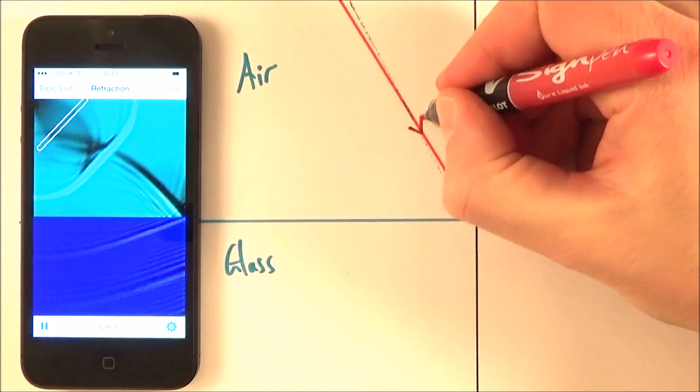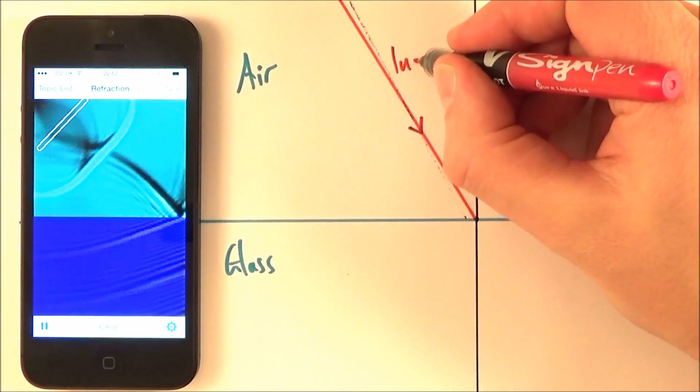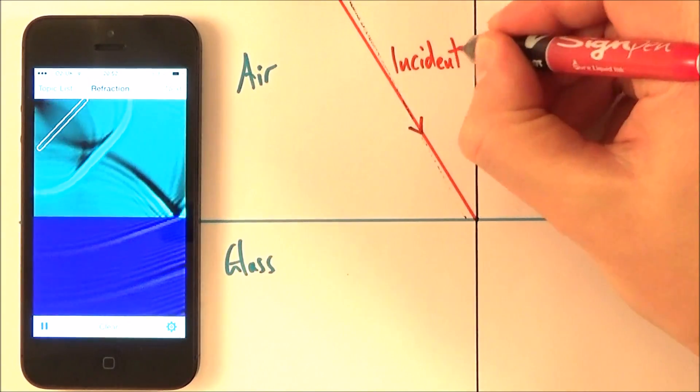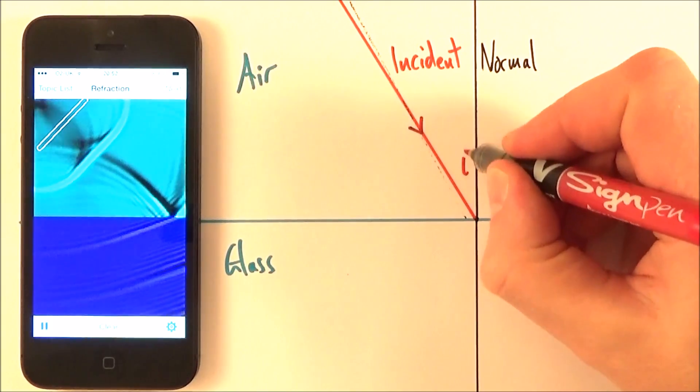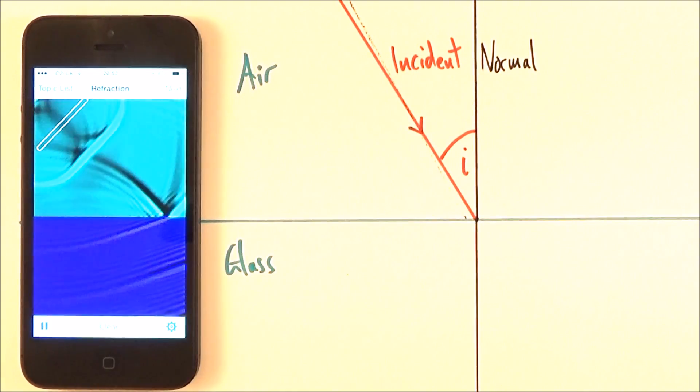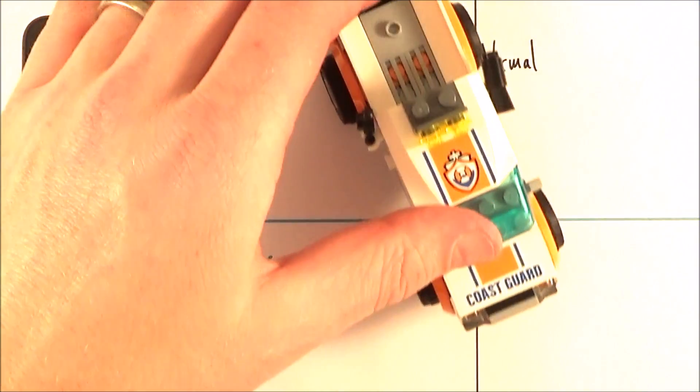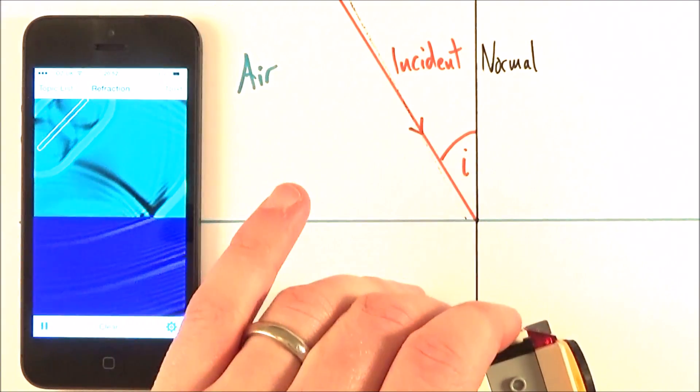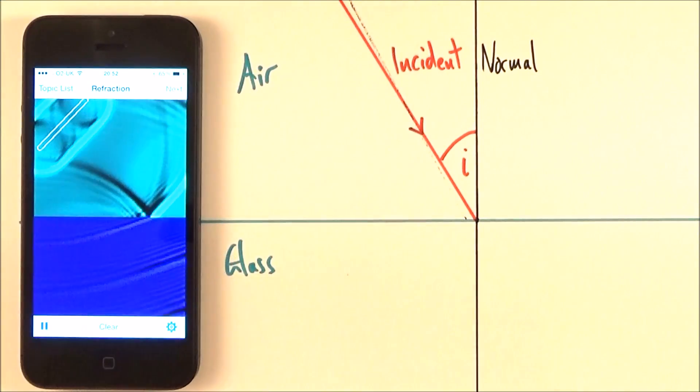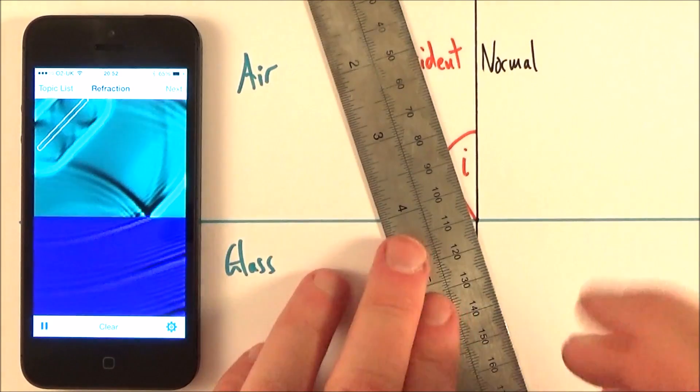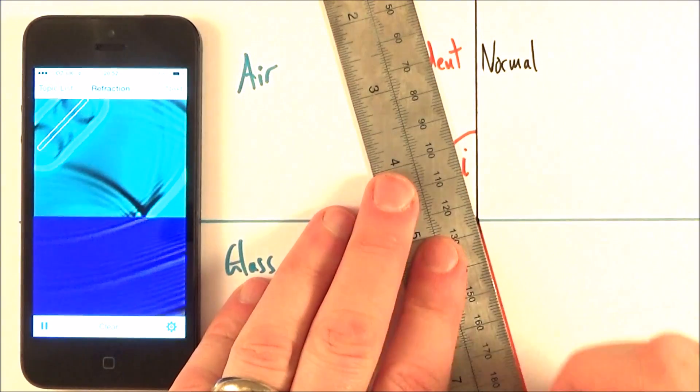Now the ray of light that comes in is what we call the incident ray. And therefore there's a certain angle of incidence i. Now as that light comes in, a bit like the car that we had before moving from concrete onto grass, it's going to bend towards normal as it slows down. And we can see that again on the app on the left hand side. So I'm going to just draw this ray of light in here.